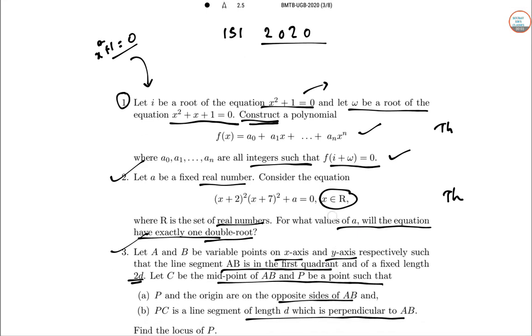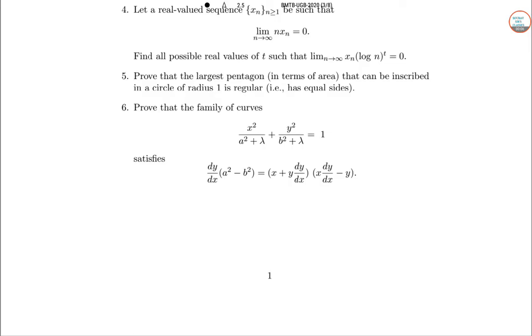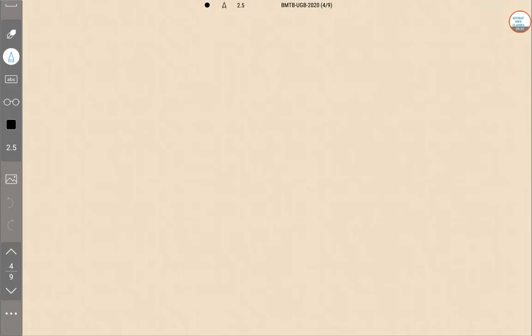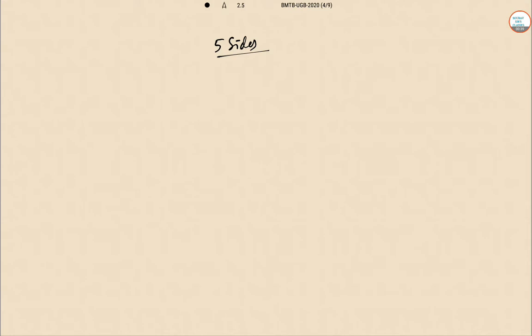Hello dear students, today we are solving ISI 2020 subjective paper. I've solved till 4 in the last two videos, so today we are solving from 5. Here we are working with the pentagon in terms of area. Prove that the largest pentagon in terms of area that can be inscribed in a circle of radius 1 is a regular polygon, that means all of its sides are equal. So we are given with a pentagon, 5 sides, inscribed in a circle of radius 1, and this will become regular. Let's draw this first.